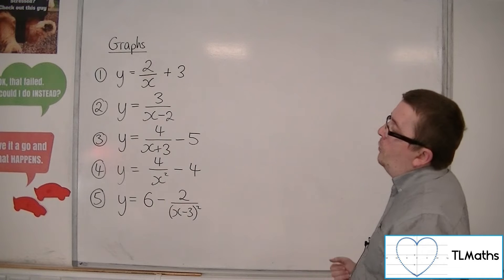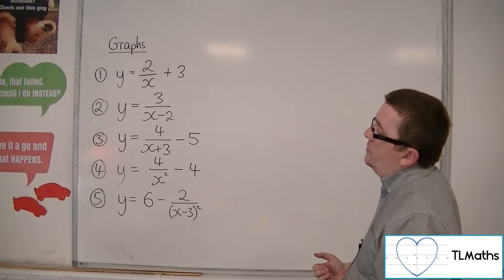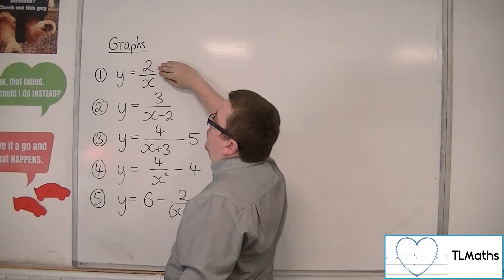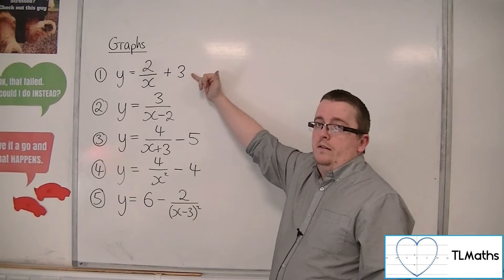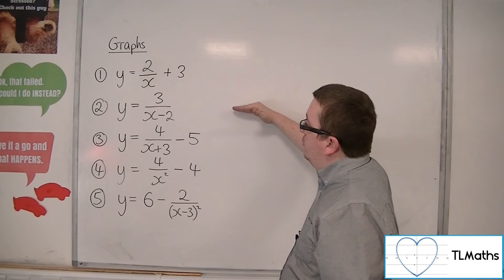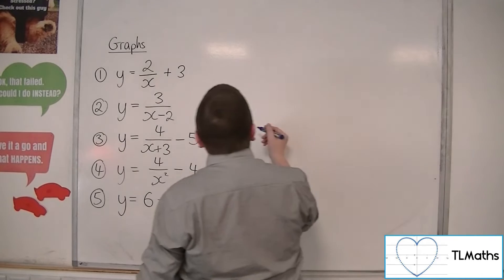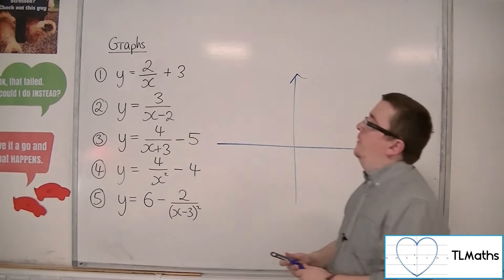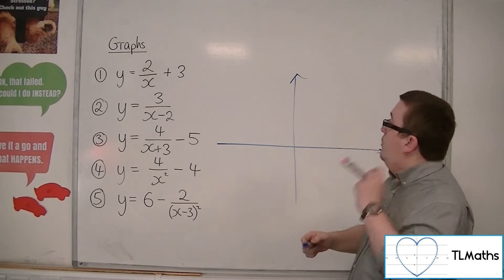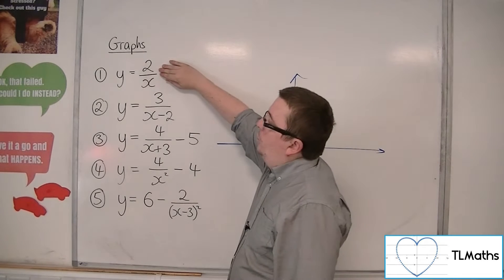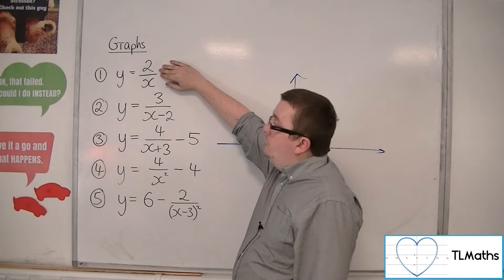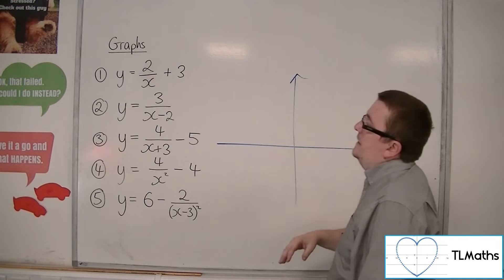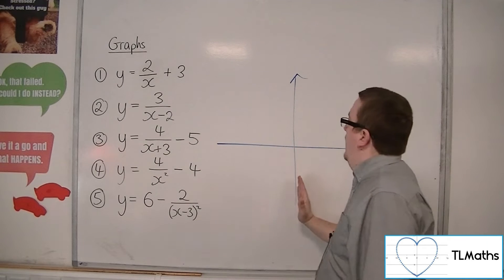For number one, we've got y equals 2 over x plus 3. We know what y equals 2 over x looks like, so we're going to be adding 3 and moving the graph up. y equals 2 over x has a horizontal asymptote at the x-axis and a vertical asymptote at the y-axis.